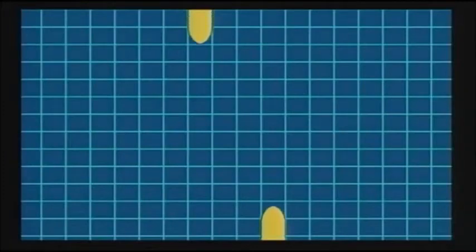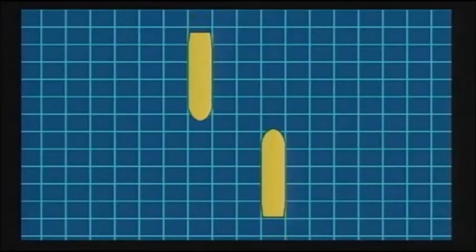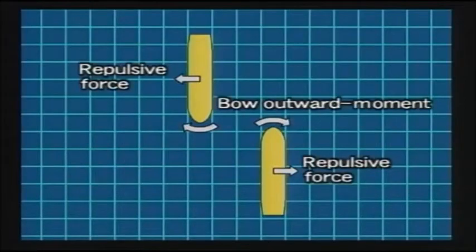Look at the case of two ships of almost the same size passing each other. When the bows of the two ships come closer within the mutual hydrodynamic range, a strong repulsive force at the midships and bow outward moment are created.